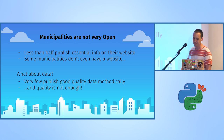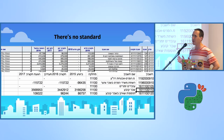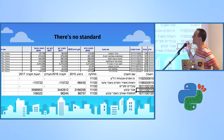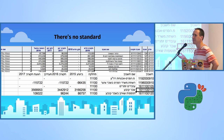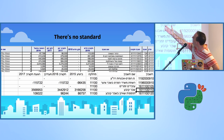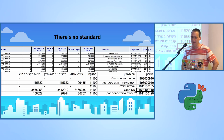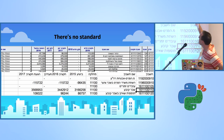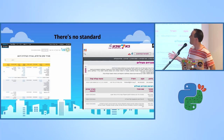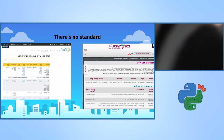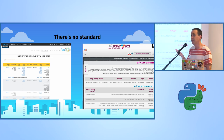Even when they publish good quality data, quality is not enough because there's no standard. Here is good quality data from two big cities — these are their budgets. Basically the same thing, a municipal budget, but both have very different column names. Looking at tenders, both published tenders, but there's only one column that's actually the same between the two tables. This is the same data type — tenders — it's not a radical concept.